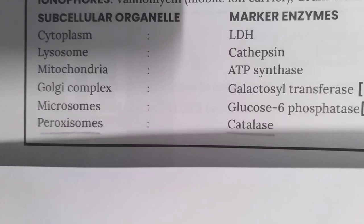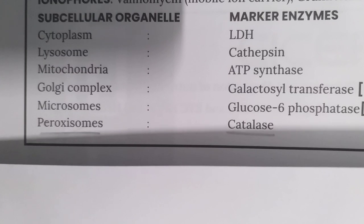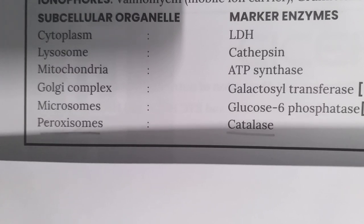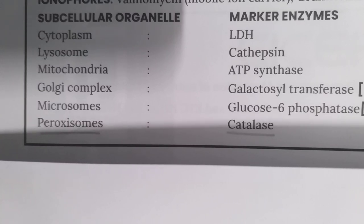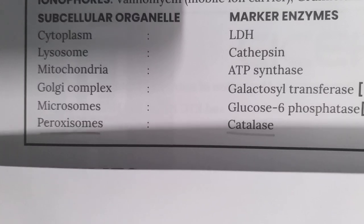In the case of the Golgi complex, it is galactosyl transferase. For microsomes, which are formed as a result of aggregation of broken endoplasmic reticulum, the marker enzyme is glucose-6-phosphatase. For peroxisomes, which consist of peroxidase and catalase, the marker enzyme is catalase.